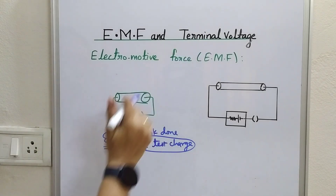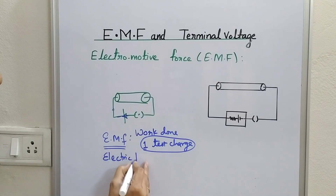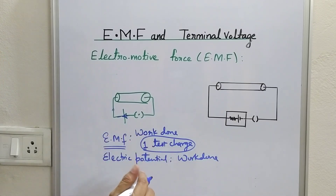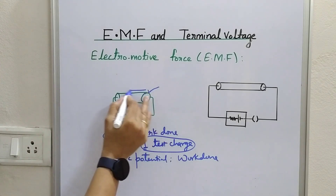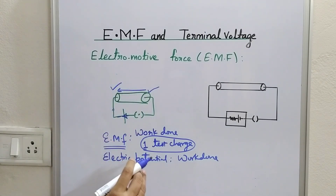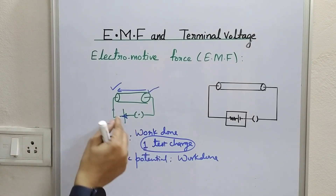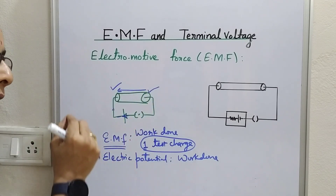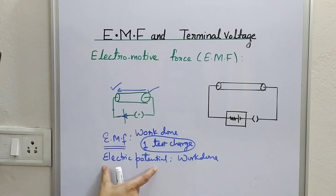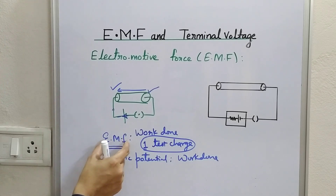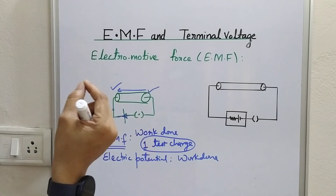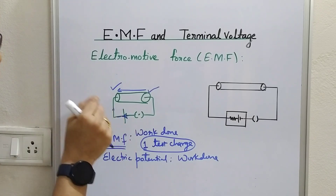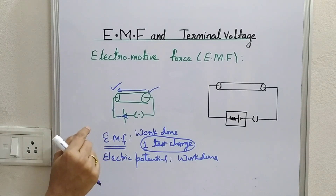Terminal voltage, otherwise known as electric potential, is the work done in taking a single test charge from one end of the conductor to the other — that is, the work done in moving a single test charge only in the external circuit. EMF is always greater than terminal voltage, because EMF covers the work done in both the external circuit and through the electrolyte of the electric cell.